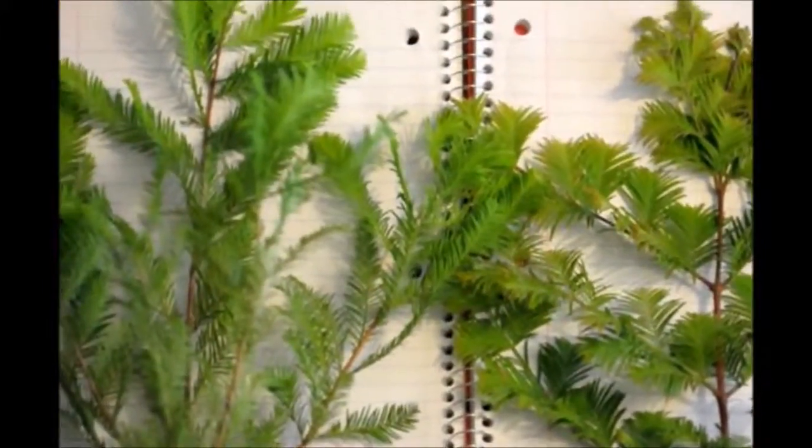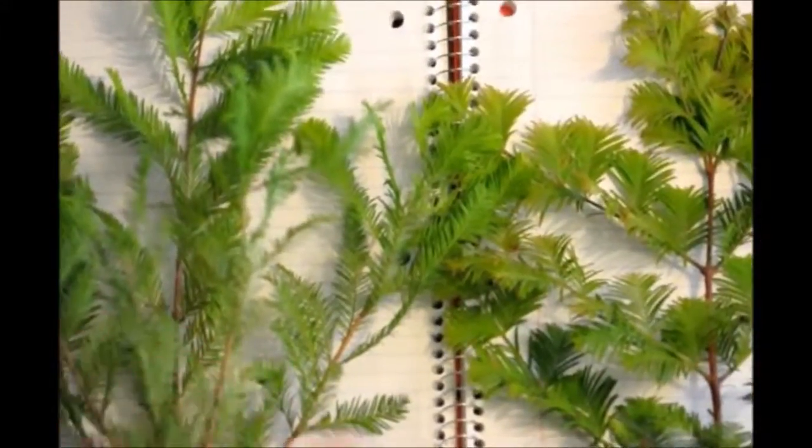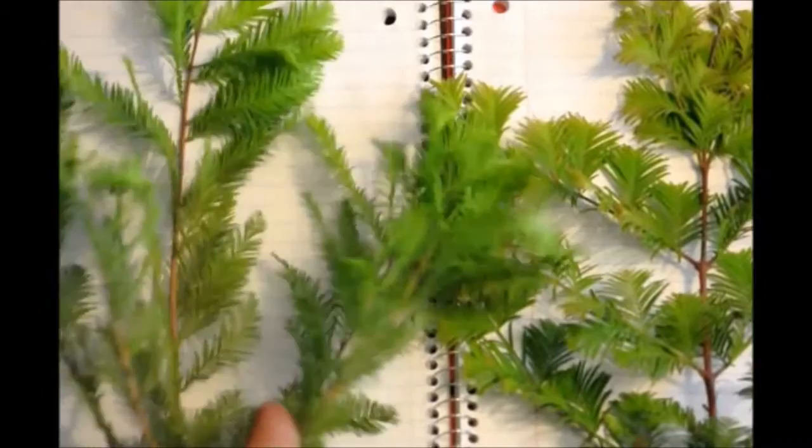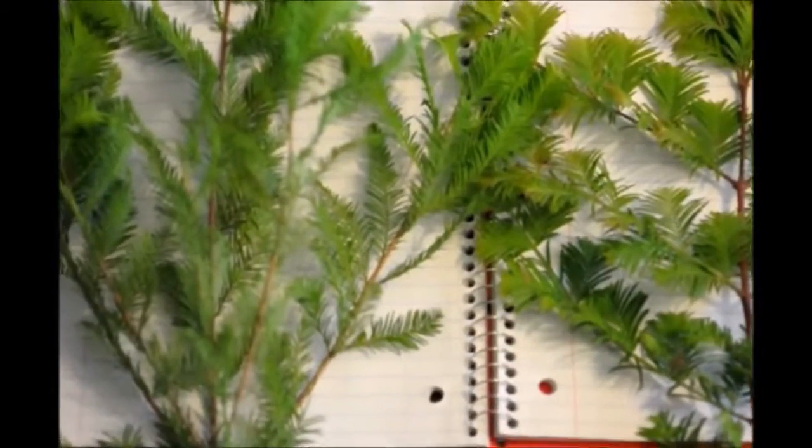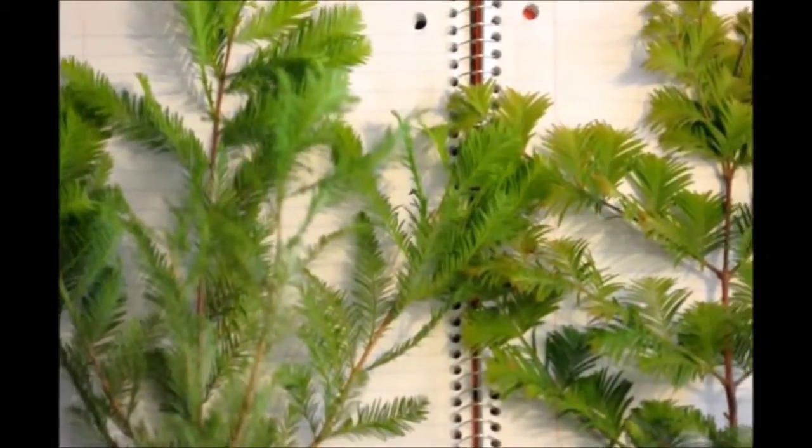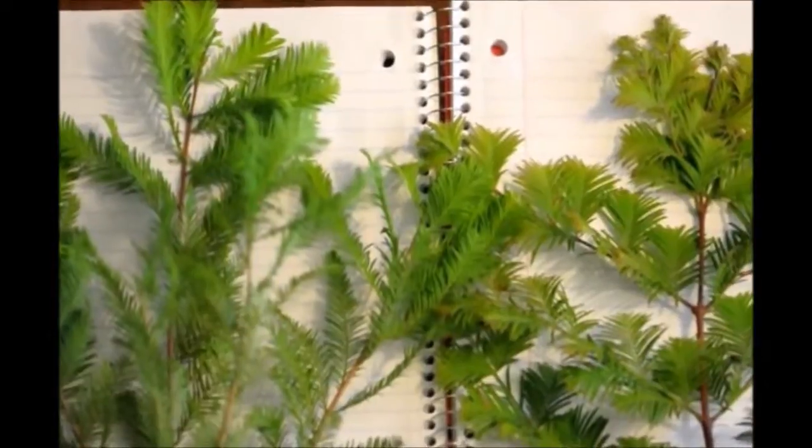First off, the similarities between the two are very much apparent. They both have green foliage. They both have a browner bark to them. They both are a deciduous conifer, which means that they have cones and they lose their leaves in the wintertime.